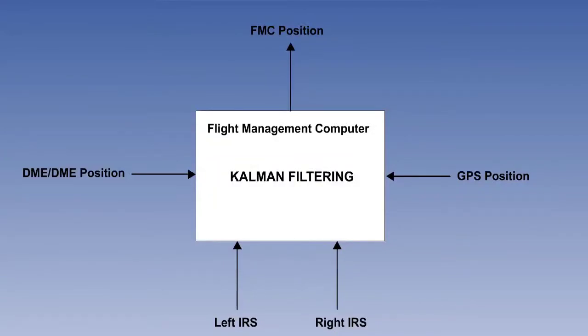This lesson is the second of three on the Inertial Reference System, or IRS. In the last one, we said that there were three main characteristics which define what we now call an IRS, which make it recognizably different from a first-generation, stand-alone, INS.